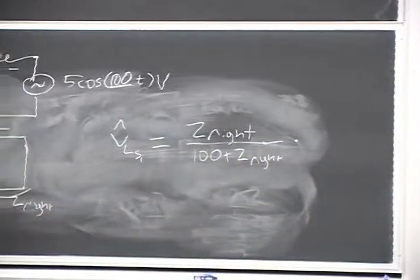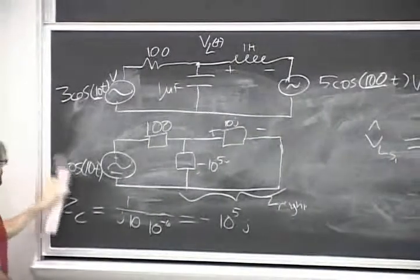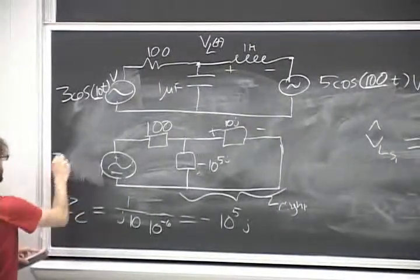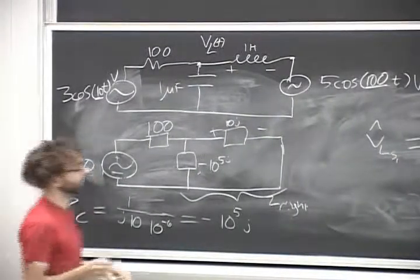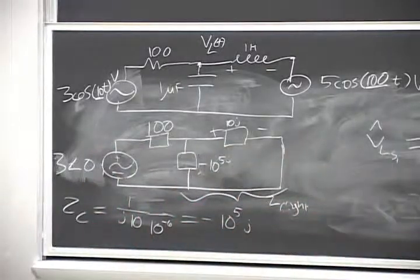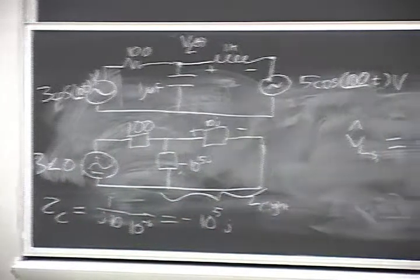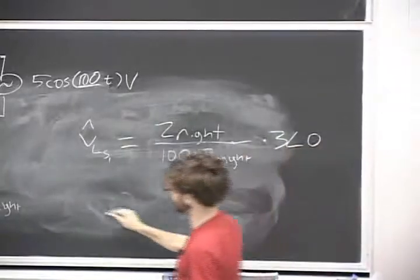So that's something we haven't done over here, right? What do we want to do with this thing? Yeah, so we'll just call it 3 angle nothing. Okay, so that's going to be times 3 angle nothing. Okay, so we have Z right. So how do we find Z right?